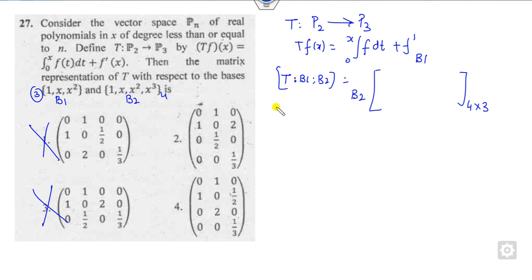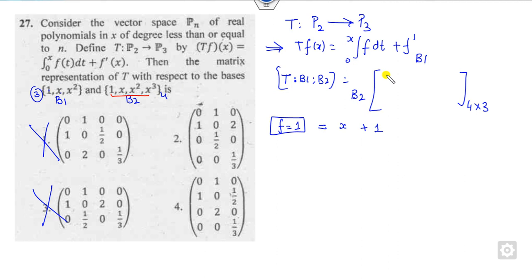Starting from B1: take the first basis function f = 1. Substituting: T(1) = integral of 1 dt + derivative of 1 = x + 0 = x. Writing x in terms of B2: constant coefficient is 0, coefficient of x is 1, rest are 0. So the first column is [0, 1, 0, 0].